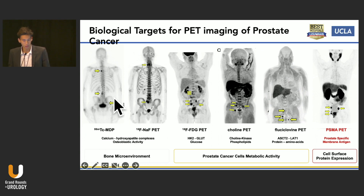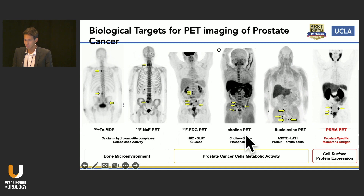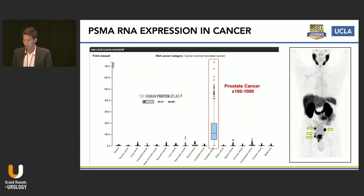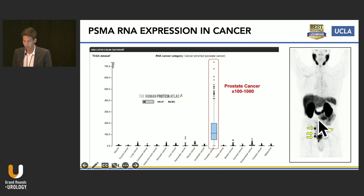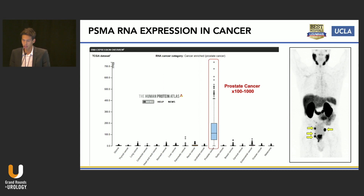Here's another, more visual way to look at this. You can see the bone metabolism and bone microenvironment surrounding prostate cancer lesions in the case of bone metastasis, the prostate cancer cells' metabolic activity with glycolytic activity, the phospholipid activity, and the amino acid. Again, we're going to talk about PSMA — prostate-specific membrane antigen — which is a cell surface protein expression we're looking at. The level of overexpression by prostate cancer cells is about 100 to 1000 times above normal levels, leading to very contrasted images with intense tumor-to-background ratio, depicting lymph nodes and bone metastasis very clearly.